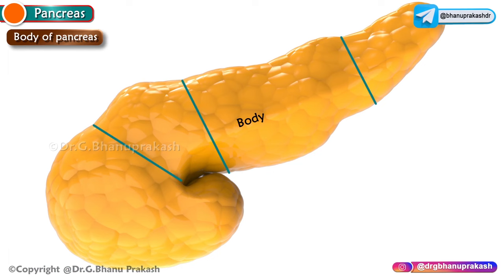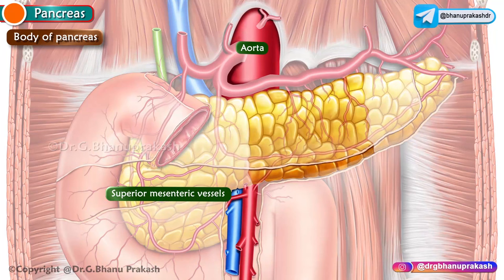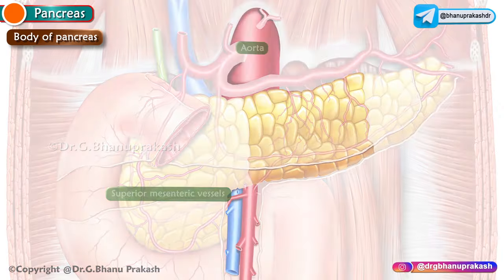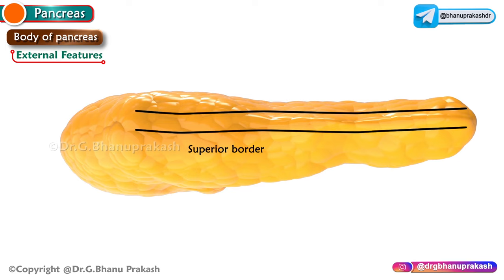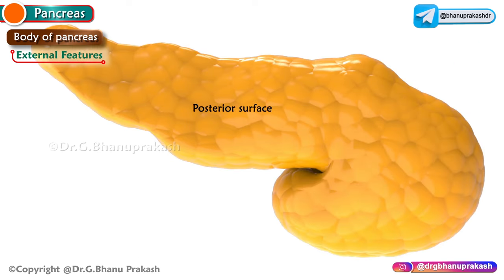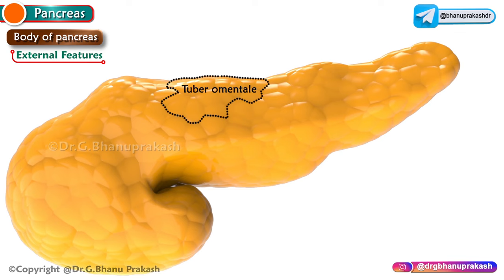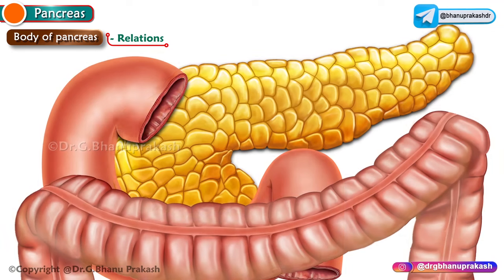The body is the elongated part of the pancreas, extending from the neck to the tail. It lies to the left of the superior mesenteric vessels, passing over the aorta and L2 vertebra. In cross-section, the body is triangular in shape, giving it three borders — anterior, superior, and inferior — and three surfaces — anterior, posterior, and inferior. There is one projection called the tuber omentale, which arises from the part of the body above the lesser curvature of the stomach.